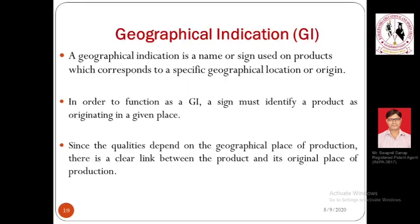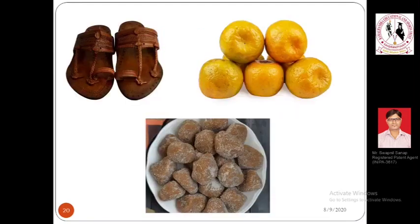Another type of IPR is geographical indication. An indication which gives an association with a geography — an indication associated with a geographical location — is called a geographical indication. Examples include Kolhapuri chappals, Nagpur oranges (Nagpur santra), and Dharwad ka pedha — a pedha manufactured and sold with its origin in Dharwad. These products are referred to by the name of their geographical origin.